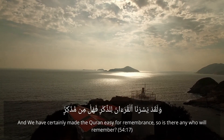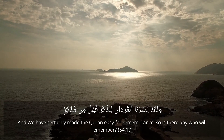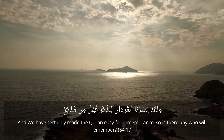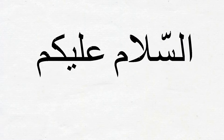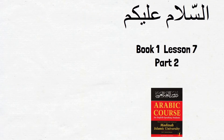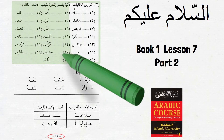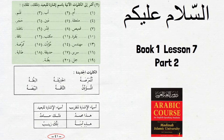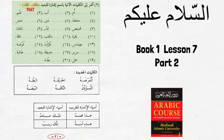وَلَقَدْ يَسَّرْنَا الْقُرْآنَ لِلذِّكْرِ فَهَلْ مِن مُدَّكِرٍ. As we already know by now, both ذَٰلِكَ and تِلْكَ mean 'that', but ذَٰلِكَ is مُذَكَّر and تِلْكَ is مُؤَنَّث اسم.